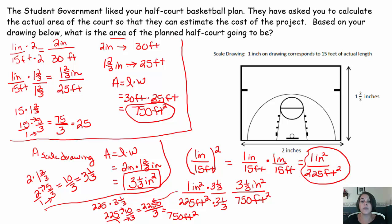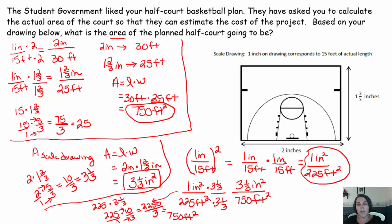No matter which method we use, we get 750 square feet. The only pitfall of the second method is that if you have one inch equals 15 feet, you need to square that to figure out how many square feet are in one square inch. Hopefully that was helpful.